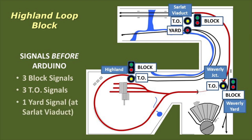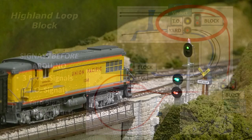The dwarf signal at Sarlott Viaduct told an operator waiting to enter the yard if they had permission to proceed. The two sets of signals at Waverly Junction and Highland were confusing enough, but the three signals at Sarlott Viaduct were absolutely maddening.